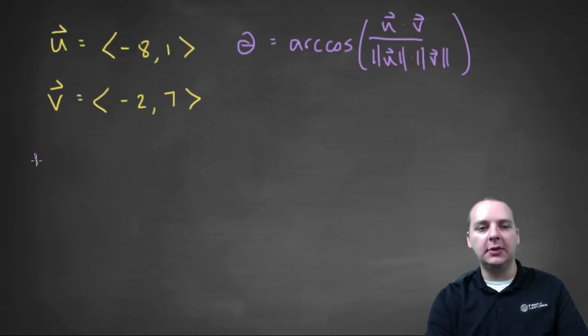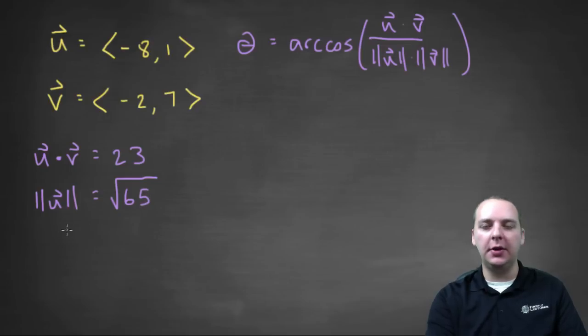So first off, u dot v, what is u dot v? I'm going to speed this up a little faster than I did it in the last video. We would get negative eight times negative two is sixteen positive, plus seven makes twenty-three. And the magnitude of u will be the square root of sixty-five, and I'm skipping a little algebra here, you can do that at your desk.